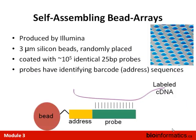Another technology is the Illumina self-assembling bead arrays, pretty different from anything we've talked about. Individual glass beads each have on the order of hundreds of thousands of probes — notice that hundreds of thousands is quite a bit smaller than the millions we discussed before. Each bead has some sort of an address or label telling you what sequence is on it, and you have an ordered array where you put a random set of beads.